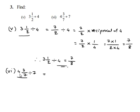4 and 3/7 can be written as 4 times 7 plus 3, that is 31 upon 7, divided by 7.